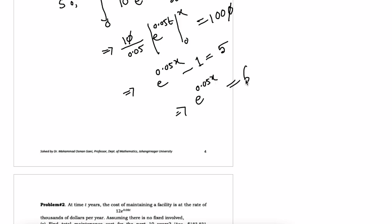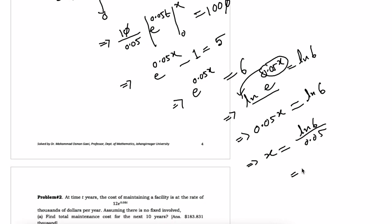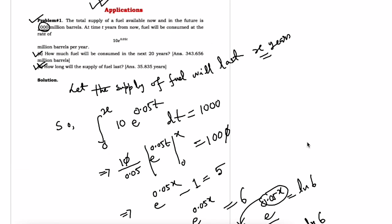Since e to the power 0 is 1, we get e to the power 0.05x equals 5 plus 1, which is 6. Taking the natural log on both sides: ln(e to the power 0.05x) equals ln 6. This gives 0.05x times ln e equals ln 6. Since ln e equals 1, we get x equals ln 6 divided by 0.05, which equals 35.84 years. The available supply will continue up to 35.84 years.